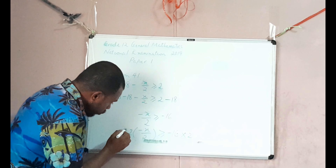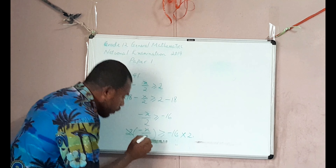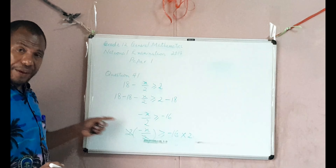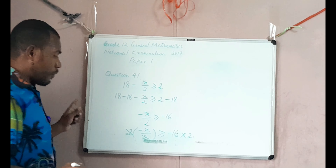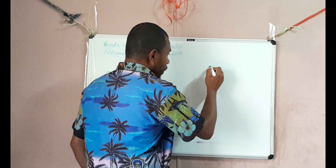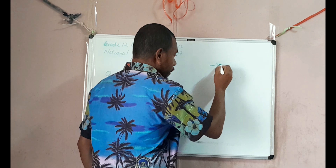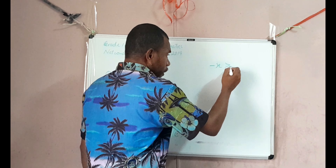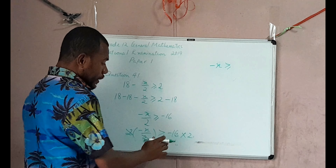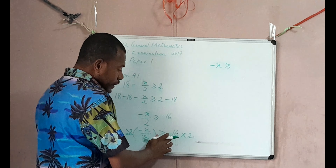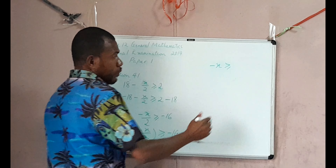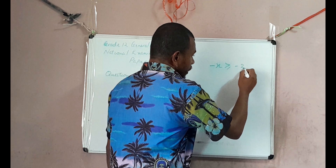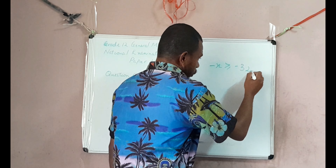Simplifying: 2 into 2 goes 1. Therefore, the left hand side is negative x, which is greater than or equal to negative 16 times 2, which equals negative 32.